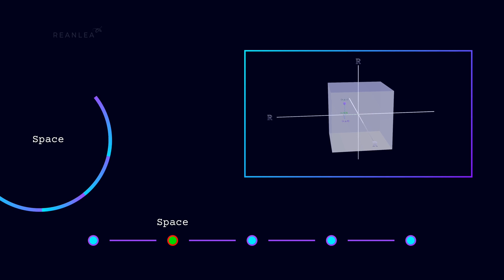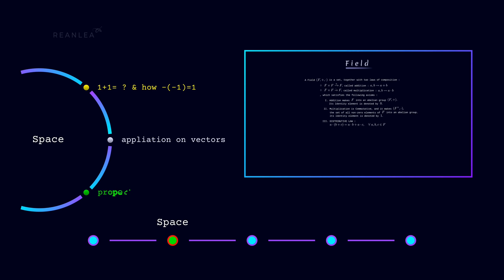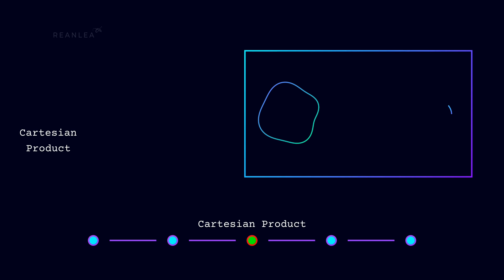Then we will discuss about a space by defining 1 plus 1 in the collection of vectors, and how minus of minus 1 becomes 1, and roles of these two identities on vector operations like vector addition and scalar multiplication. And we will define field and vector space and we will have a close inside on their properties. Then we will discuss Cartesian product, vector addition, and coordinate system.